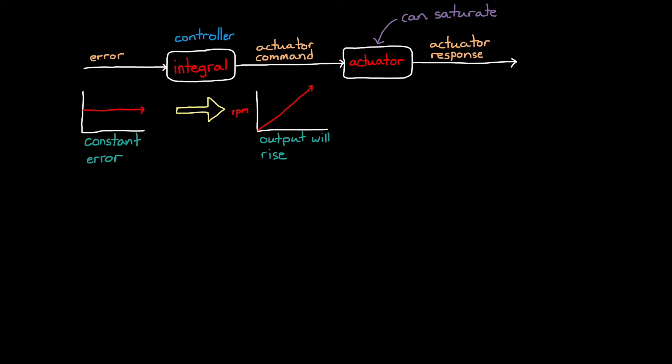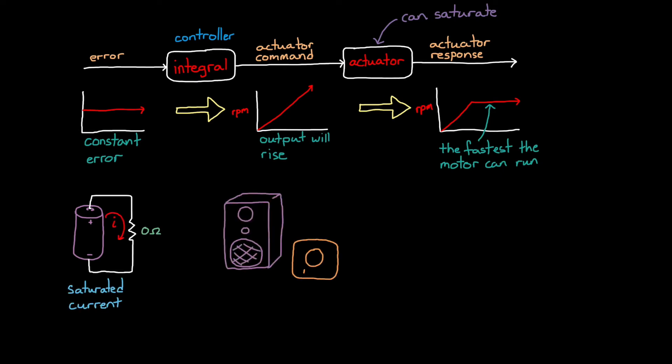When that error goes through the integrator, the output will continue to rise over time. And if our actuator is, say, a motor, then we can think of this value as the commanded RPM. If we command a motor with this ever-increasing request, it will spin up and follow the command at first. But eventually it will hit its maximum RPM and won't go any faster, even if the actuator is being commanded to do so. This is saturation. The motor can't run any faster. And it's not just motors that experience saturation, it's all real actuators. For example, a battery can only supply so much current, and a speaker can only produce a sound so loudly.